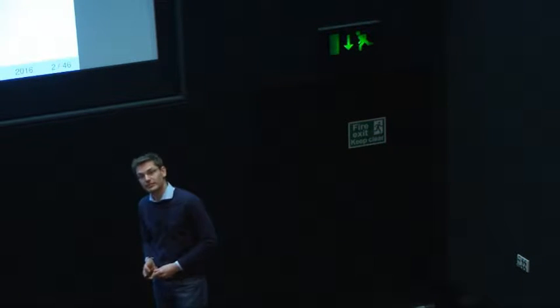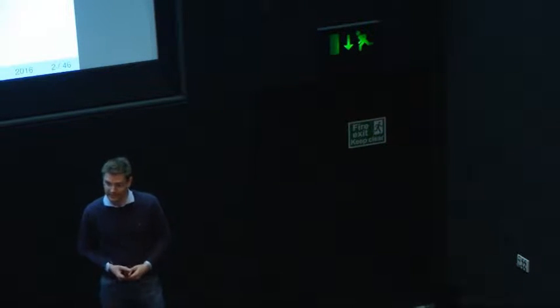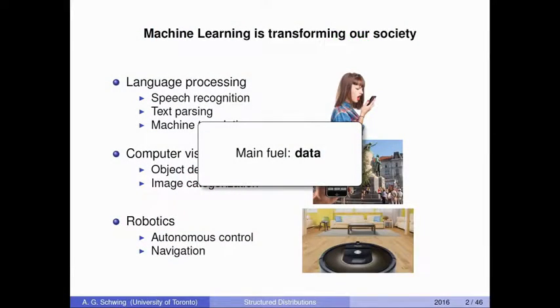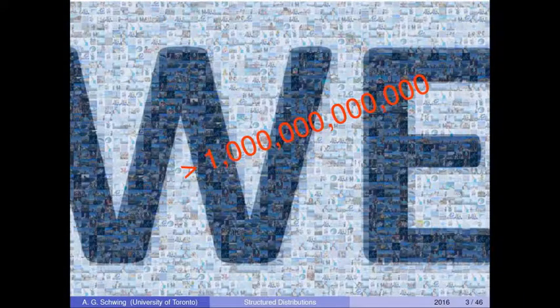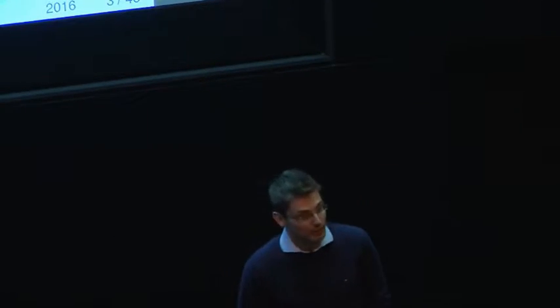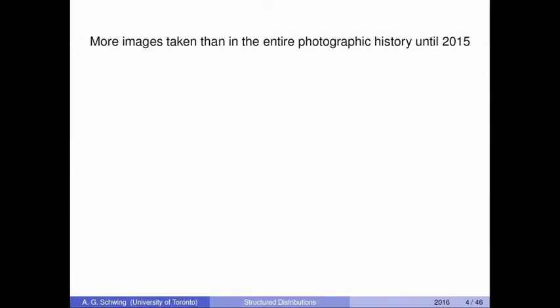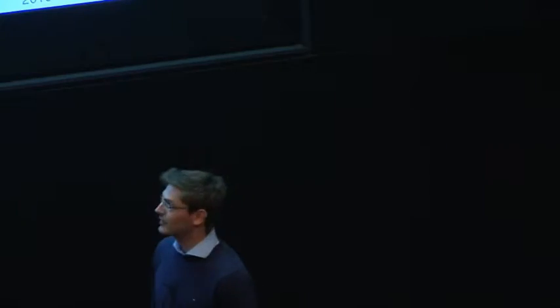And why do we get those impressive results these days? We get those impressive results in part due to algorithmic improvements, but also because of the huge amount of data that we have available. Taking everyone's devices into account, we all together took more than one trillion pictures in the first half of 2015. This number is astonishing because it means we took more pictures in the first half of 2015 than in the entire photographic history until 2015, underlining an incredible growth rate.